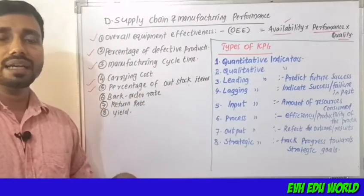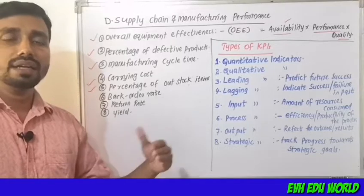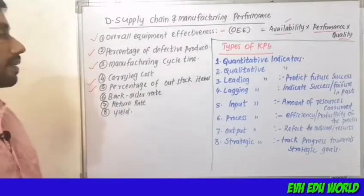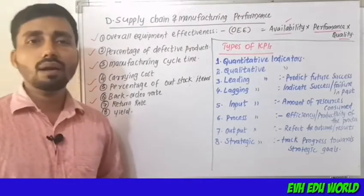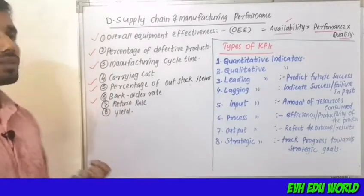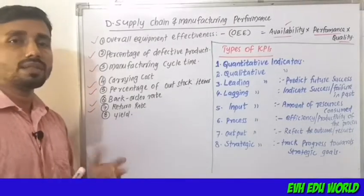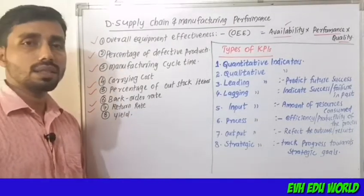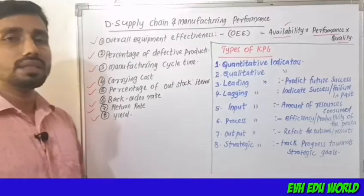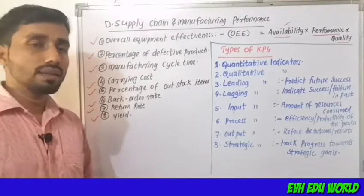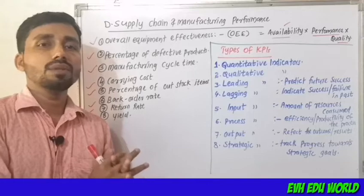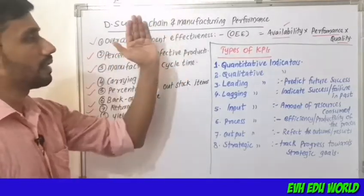If a customer places an order and we are out of stock, we calculate the percentage of out-of-stock items. The next is backorder rate. Then return rate. And finally, yield — the total yield value considering all cost items, ensuring no scraps or wasted stock.